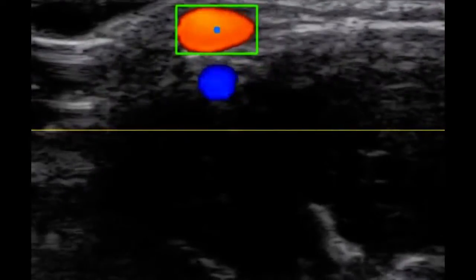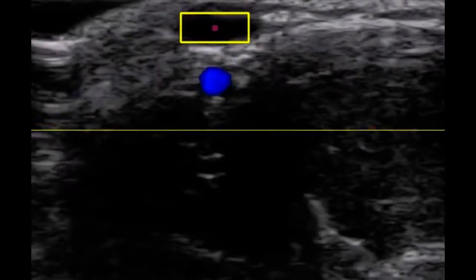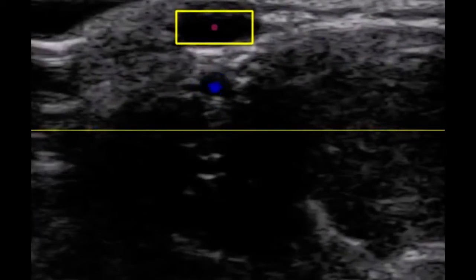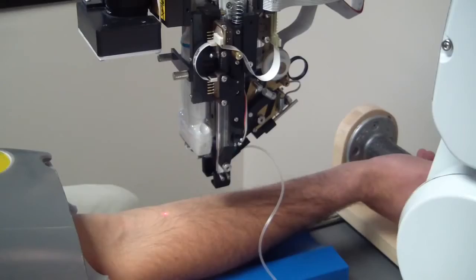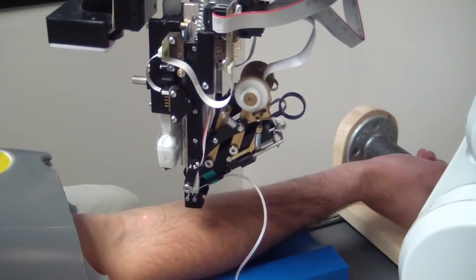Once the V-Bot system selects a target vein, it turns to ultrasound to confirm that the selected vein has sufficient blood flow for a successful blood draw. The robot then aligns the needle and sticks it in. The whole process takes about a minute.